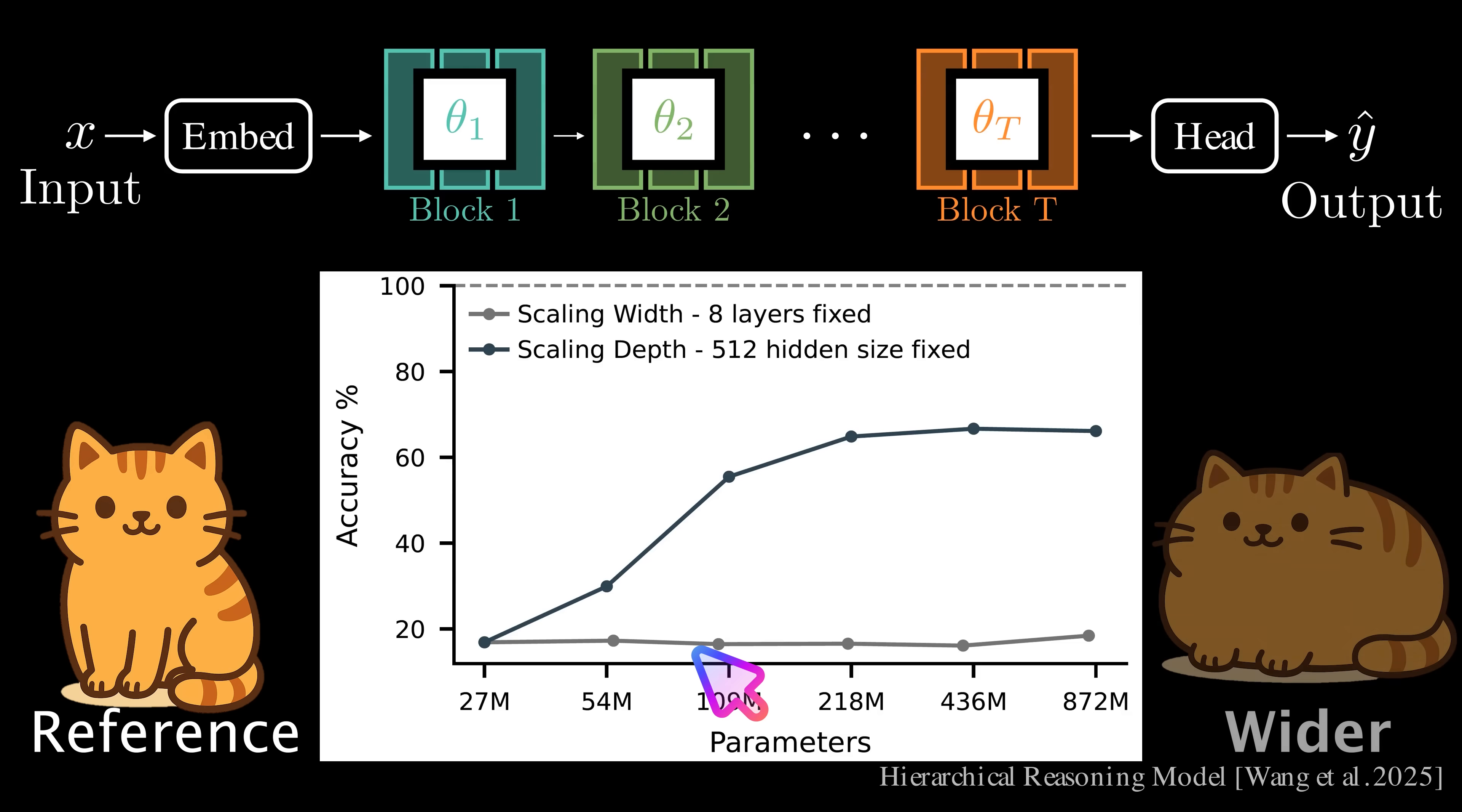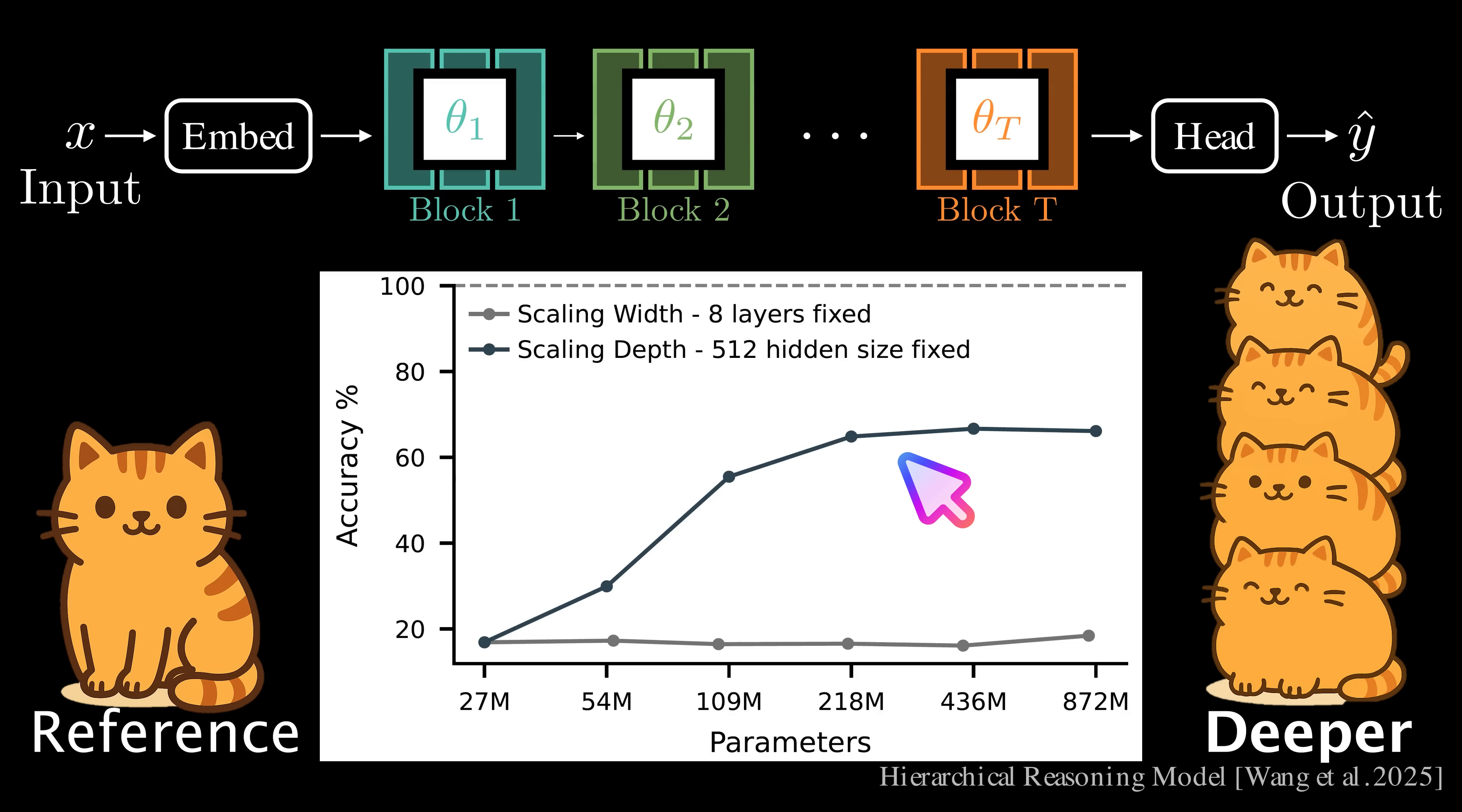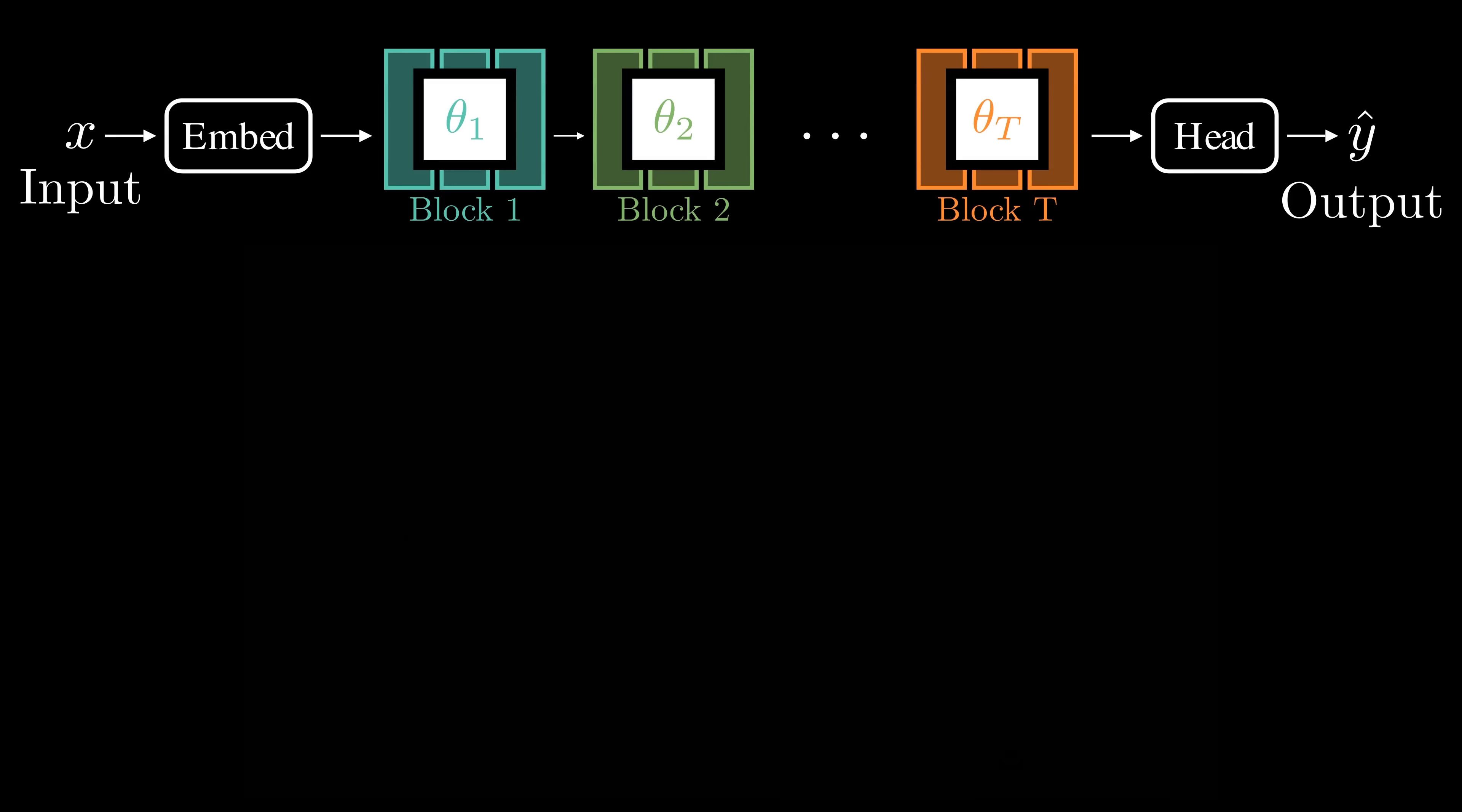Simply increasing the transformer's width does not lead to better performance. Instead, increasing the model depth is critical for solving these reasoning tasks effectively. However, making the model deeper also greatly increases the total number of parameters. How do we overcome this challenge?